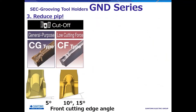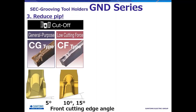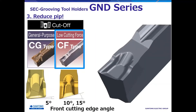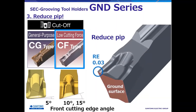Next, we solve the problem of PIP formation. Improvement of sharpness is necessary to reduce PIP. Although there is a trade-off between sharpness and cutting edge strength, you can select GND with 5-degree, 10-degree, and 15-degree lead angles to accommodate any type of machining. CF type, for low cutting force machining, is the most effective chip breaker for reducing PIP due to the ground front cutting edge and a minute corner radius of 0.03mm.